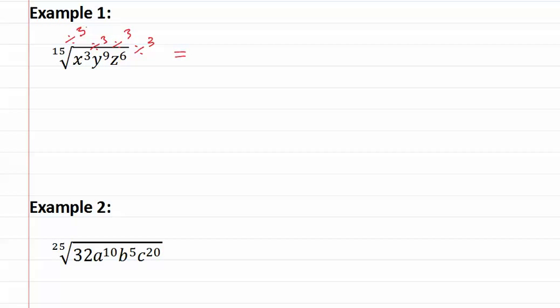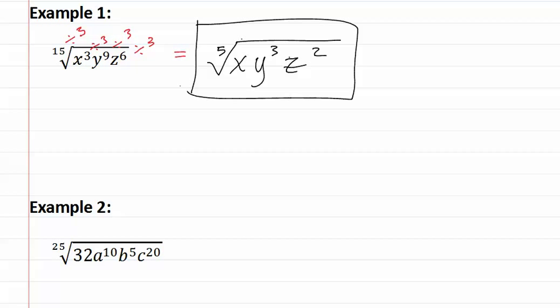This will now give us fifteen divided by three is a fifth root. Three divided by three is one, so one x. Nine divided by three is three, and six divided by three is two, which gives us our reduced index.